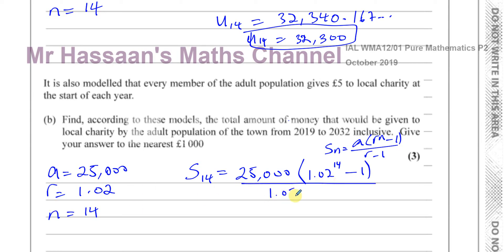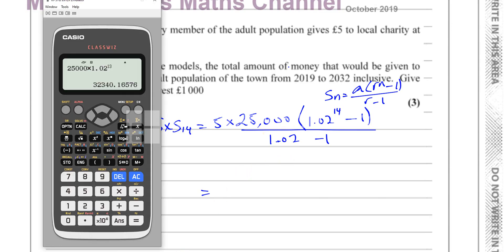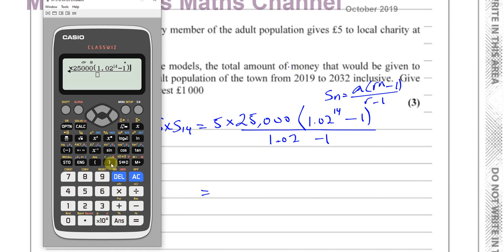So we want 5 times the sum of the first 14 terms: 5 times 25,000 times (1.02^14 − 1) divided by (1.02 − 1). That gives us 1,996,742 point something.